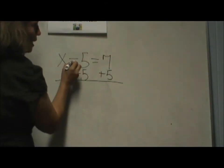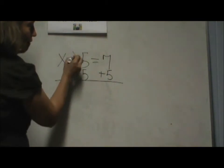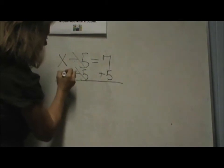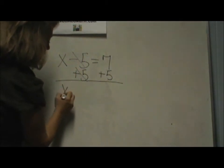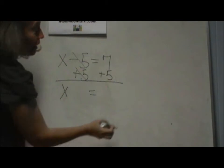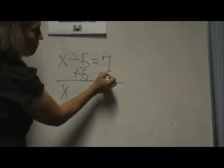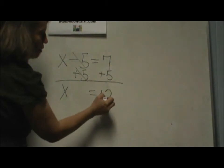Now let's simplify. Negative 5 plus 5 that adds to 0. So all I am left with on the left side is the value x. On the right side I just do the straight operation 7 plus 5 and that is equal to 12.